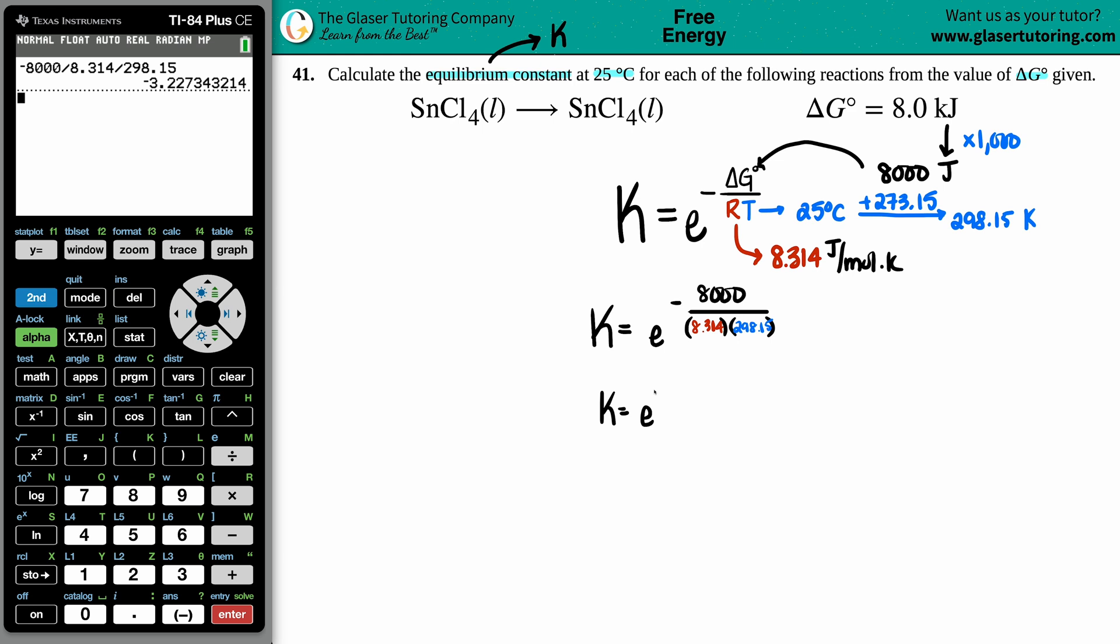And now I have a negative 3.227 with a lot more numbers. Now I'm not going to round, but I'm also not going to write out those numbers. So I'm going to now use my e button—second LN, that's the e button—and then I'm just going to grab that value, plug it in, press enter.